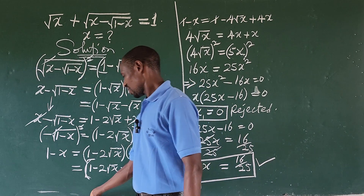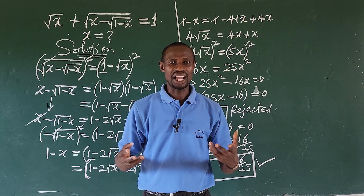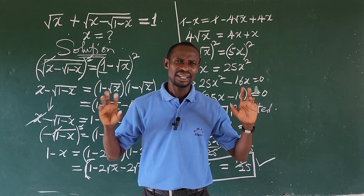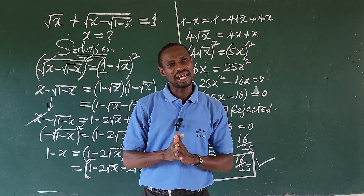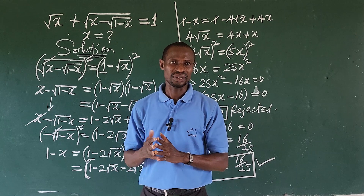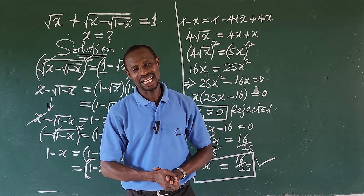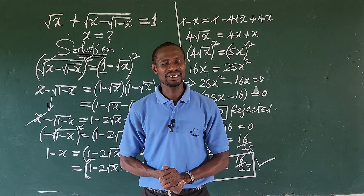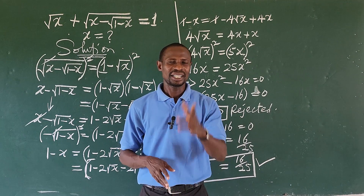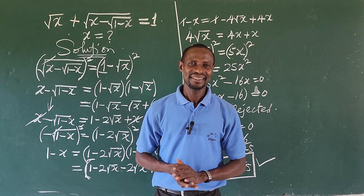Substituting x equals 16/25 back into the original equation confirms it satisfies the radical equation, so this is the correct answer. I want to say a very big thank you to my viewers and subscribers who spotted the error and dropped it in the comments. We always take corrections — we are not perfect, only God is. Thank you for encouraging us and for following what we teach on this channel. My name is Jakes, and I love you all — bye for now!